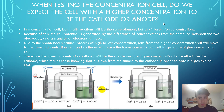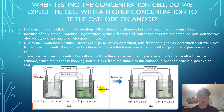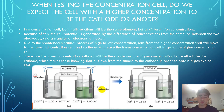Do we expect the cell with a higher concentration to be the cathode or the anode? To begin, a concentration cell is defined as a cell with two half reactions that both contain the same element, but the only difference is they will be at different ion concentrations. Because of this, the cell potential is generated by this difference of concentrations in the same ion between the two electrodes, and so transfer of electrons will still occur.